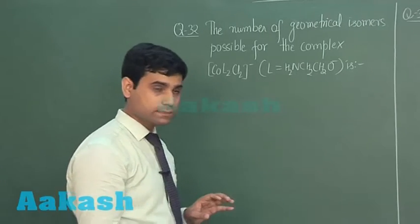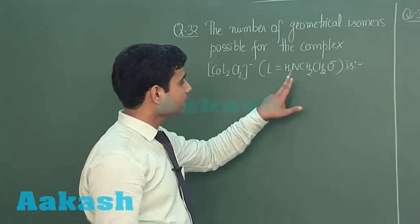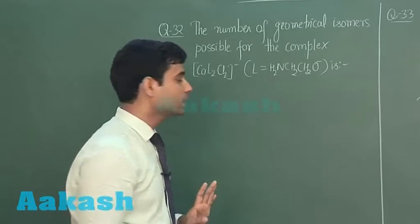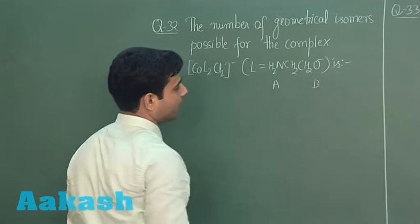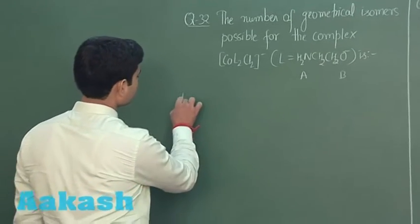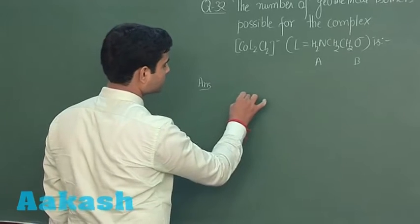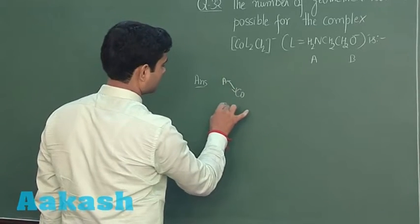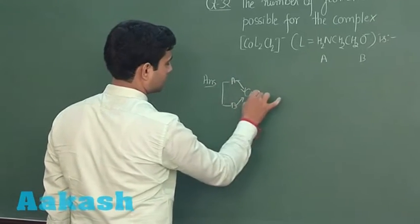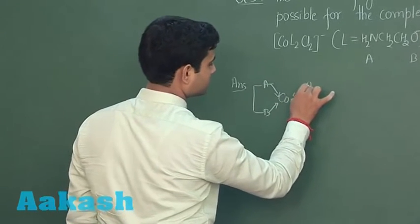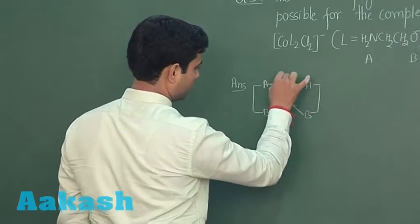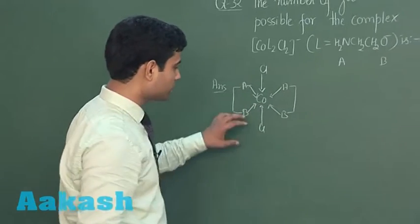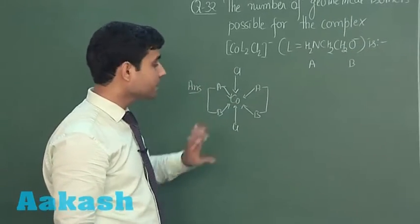L₂ is a bidentate ligand, so it has 2 donor sites — let us say A (NH₂ group) and B (oxygen group), with 2 carbon atoms in between. Drawing the isomers: in the first structure, AA are at cis position, BB are also at cis position, but Cl-Cl are at trans position.